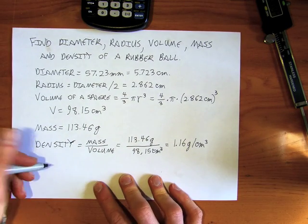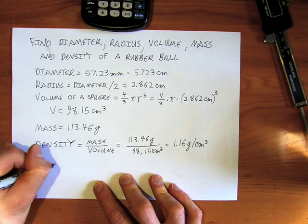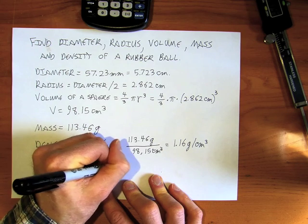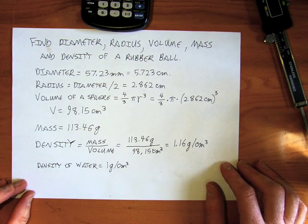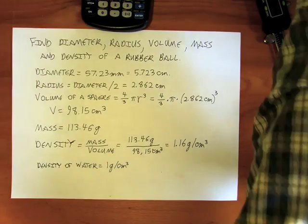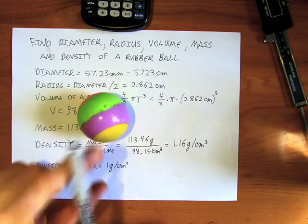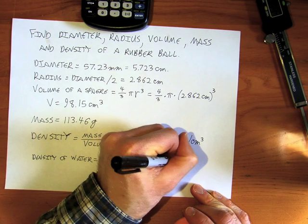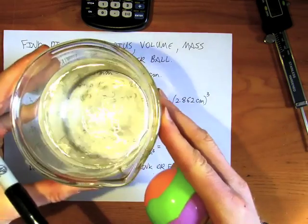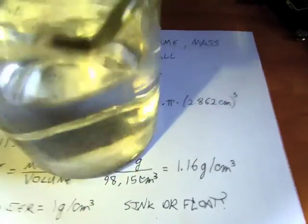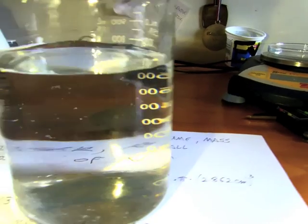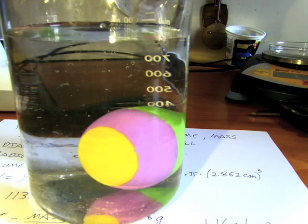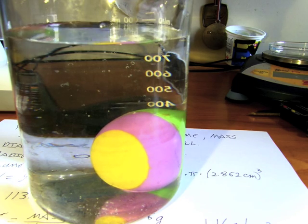Now, just a little fact — the density of water is 1 gram per centimeter cubed, so should this ball sink or float in water? And it sinks because its density is greater than the density of water.